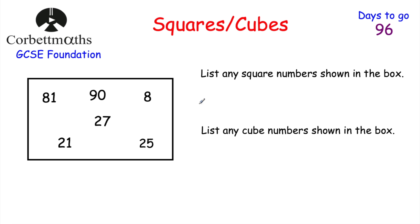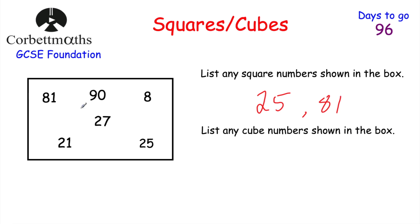Here's an exam-style question — pause now to try it yourself. The question asks you to list any square numbers shown in the box. Going through: 25 is a square number (5×5) and 81 is a square number (9×9), so the square numbers are 25 and 81. The next part says write down any cube numbers in the box. 8 is a cube number (2×2×2), 27 is a cube number (3×3×3), so the cube numbers are 8 and 27.